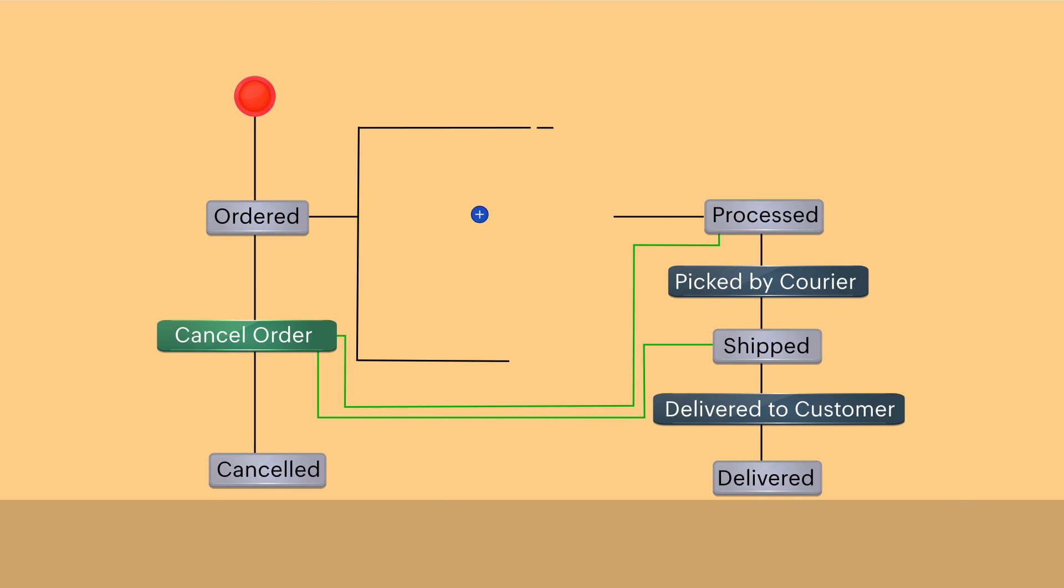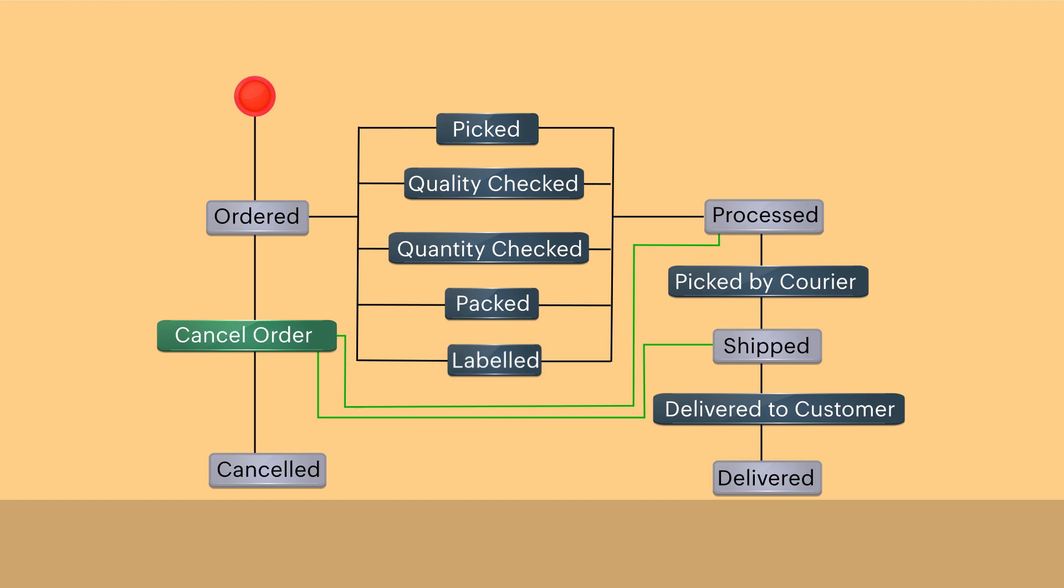In the same example we discussed earlier, Picking, Packing, Quality Check, Quantity Check, and Labeling are the various actions that must be done in order to move from the Ordered to the Processed stage.